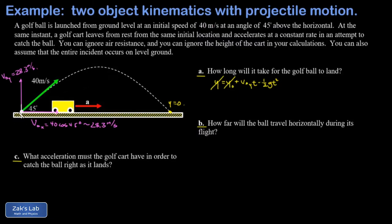So I end up with zero equals 28.3t minus one-half g t squared. We're just using 9.8 for g so I have a minus 4.9 t squared. This is a factorable quadratic equation.